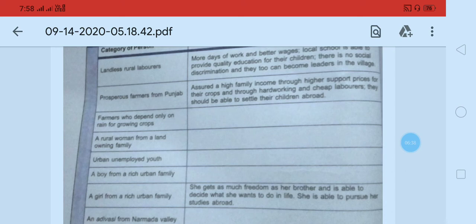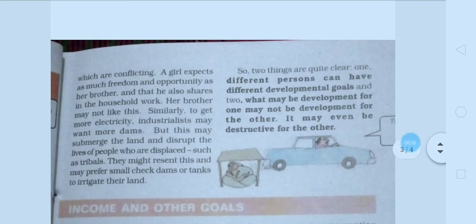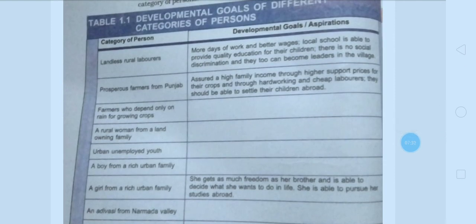So the key point is that development varies from place to place and person to person. The definition of development: different people can have different development goals, and what may be development for one may not be development for another. It may even be destructive for the other. This is a very important point within development.